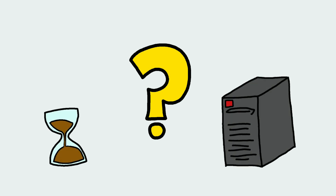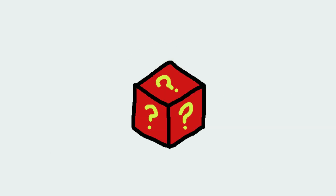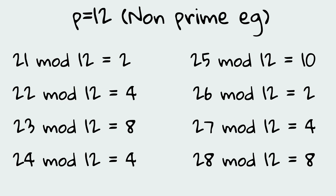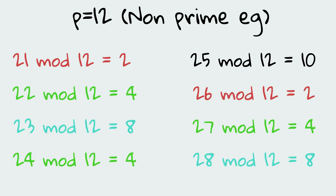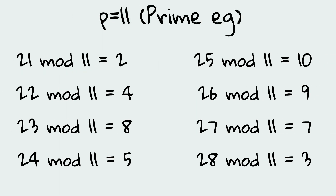One of the reasons prime numbers are used is to avoid repeating patterns. For example, let's take p equals 12, a non-prime number — use of this number leads to repeating patterns, and in cryptography, randomness is critical. On the other hand, let's take p equals 11, a prime number. Notice that now, in contrast, there are no patterns.